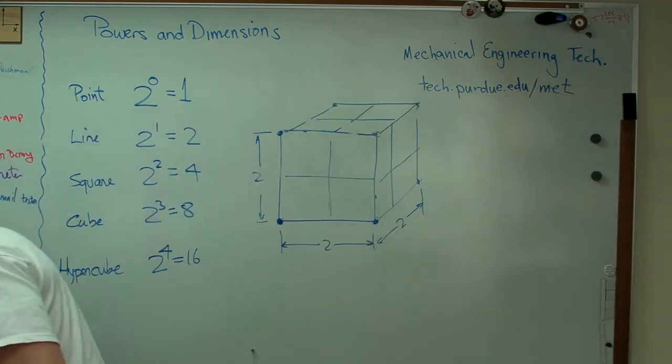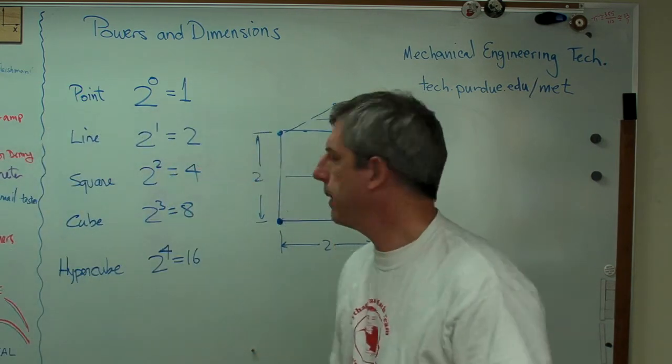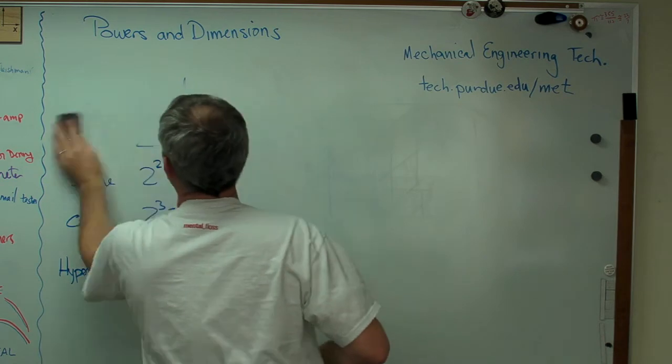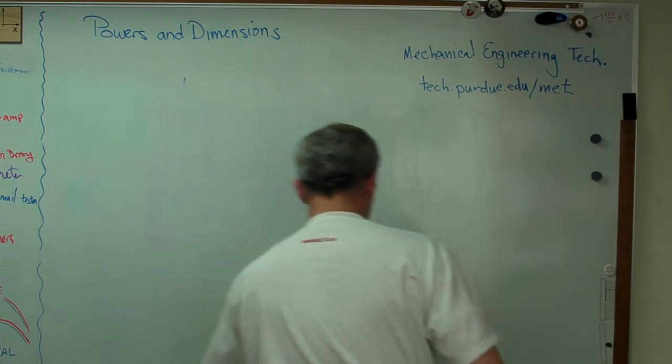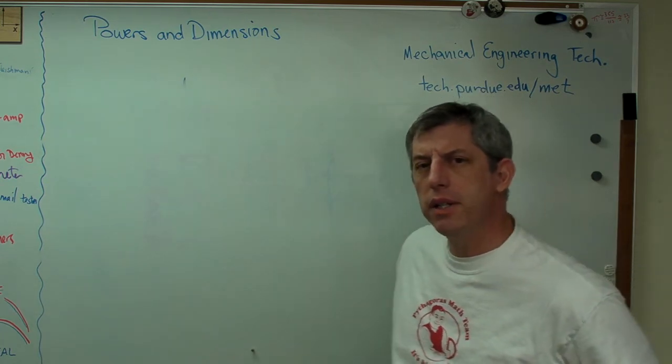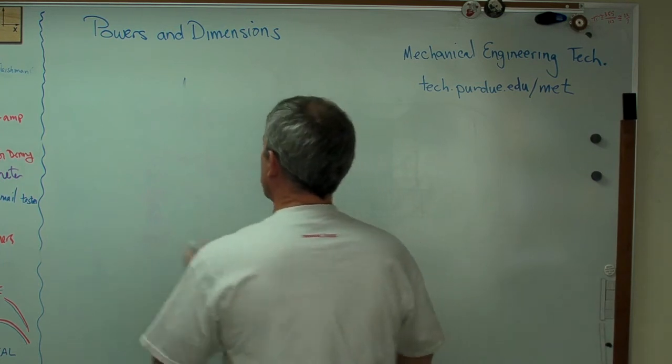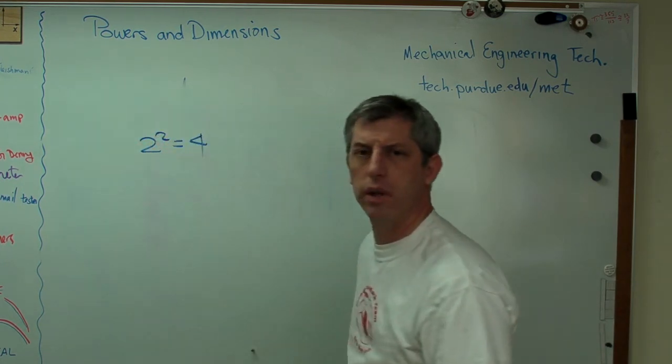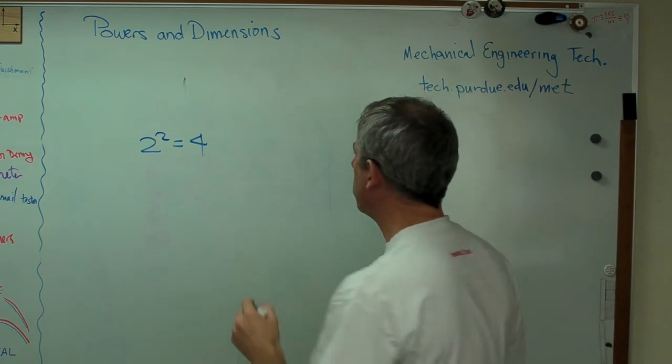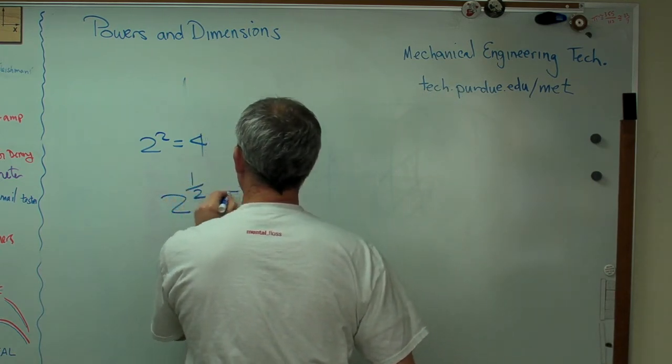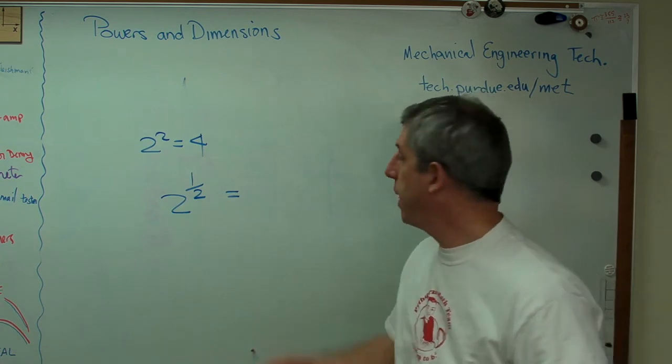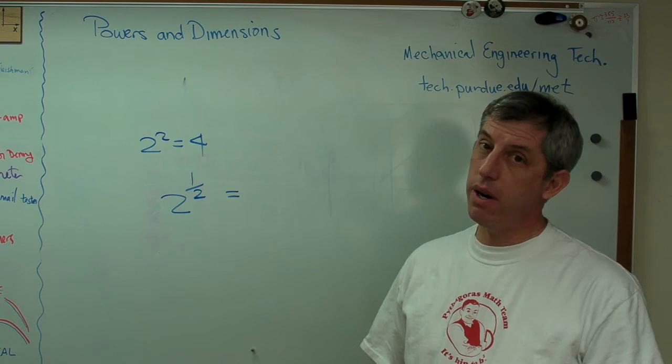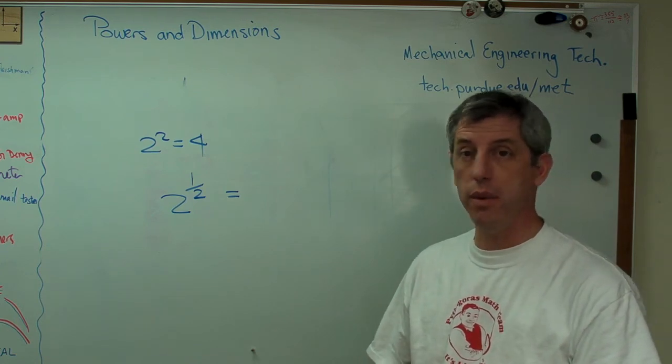Any reason you can think of that numbers can only be raised to integer powers? Two to the two equals four, all right? What happens if I raise two to the one-half power? I can do that. Mathematics doesn't mind, doesn't care what that power is. The power doesn't have to be a whole number if you don't want it to be.